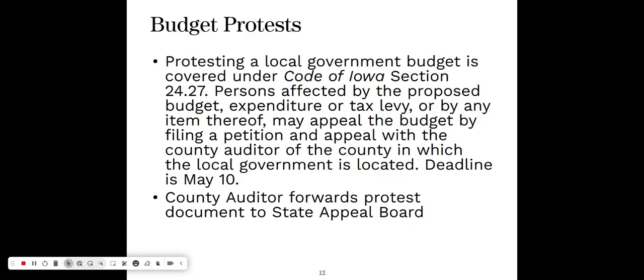Folks can protest your budget even after it's been approved by your local board and you've had your hearing. Their deadline to do that is May 10th — essentially 10 days after your budget deadline. They would submit the petition to the county auditor, who would then forward that protest document to the State Appeal Board. The State Appeal Board is a three-member body consisting of the Director of the Department of Management, the Treasurer of State, and the Auditor of State.